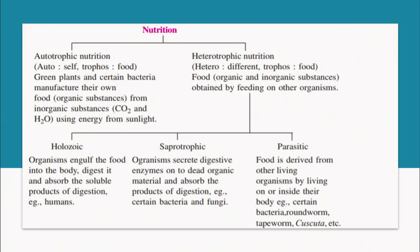Nutrition can be of two types: autotrophic and heterotrophic. Autotrophic means all the green plants — auto means self and troph means food. All the green plants and certain bacteria manufacture their own food with the help of inorganic substances: carbon dioxide, water and sunlight. Green plants contain a pigment which helps in capturing sunlight, and with the help of carbon dioxide and water they change it into the glucose molecule.